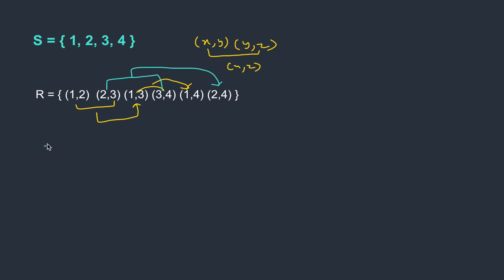Examples of transitive relations include equality, less than or equal to, greater than or equal to, and even the subset relation.